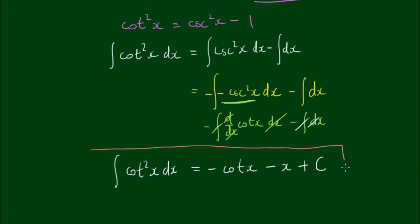So thus we have the integral of the cotangent squared of x is equal to the negative of the cotangent of x minus x plus c.